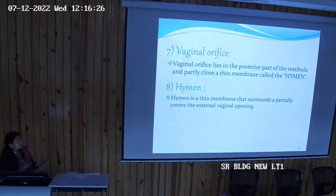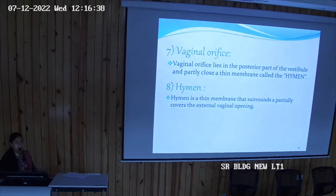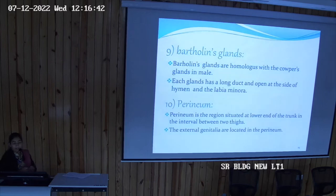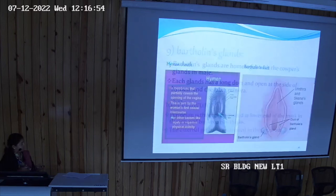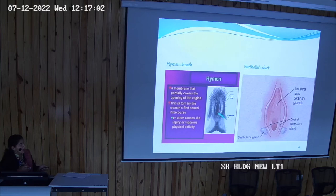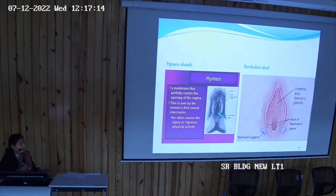The vaginal orifice lies in the posterior part of the vaginal vestibule and is partly or completely covered with the hymen. Bartholin glands are homologous with the Cowper's gland of the male. The perineum lies between the vaginal and the anal orifice. The Bartholin glands are located outside the labia majora and their ducts are long, opening towards the vaginal orifice — their duct opens inside towards the labia minora near the vaginal orifice.